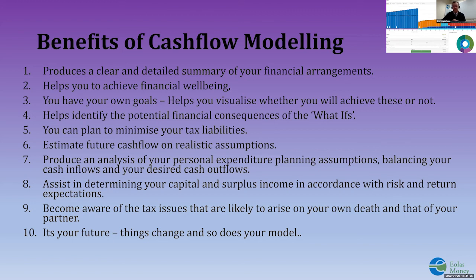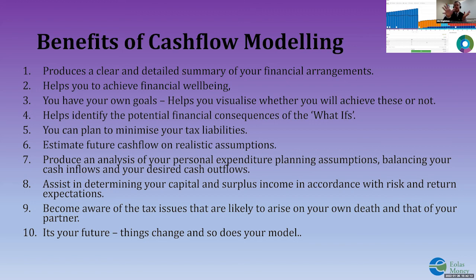We can model all these things and more. Cash flow modeling assists in determining your capital and surplus income in accordance with risk and return. For the educational saving I used a return of 4% — that's midpoint for someone in a risk spectrum of one to seven, i.e., medium risk. Even those funds are doing well in excess of that, but I like to be prudent and under-promise and hopefully over-deliver. We can also make you aware of any tax issues — for business customers planning to sell their business, the sweet spot for CGT exemptions is between 55 and 65. And the key thing: it is your future. Things do change and so does the modeling — it's always adaptable to what happens in your world.